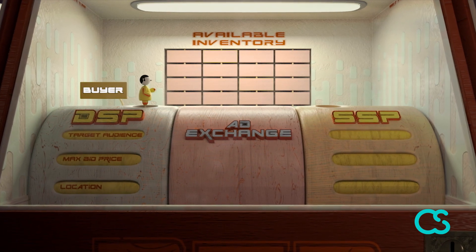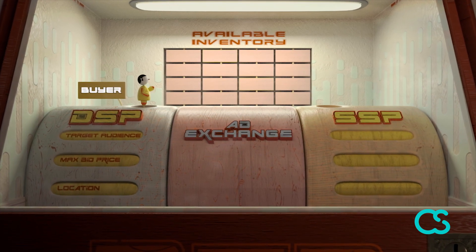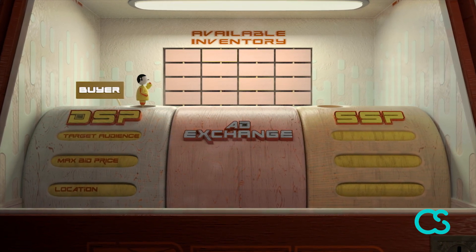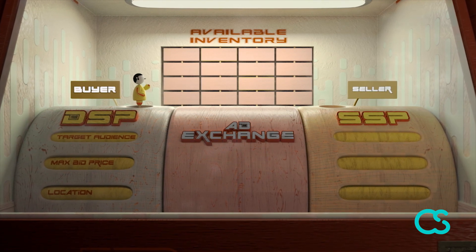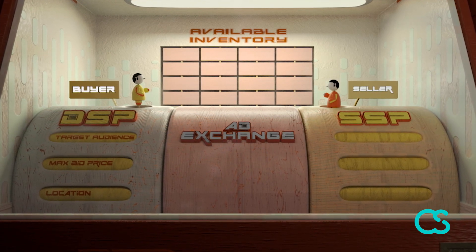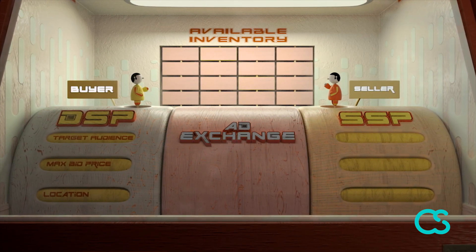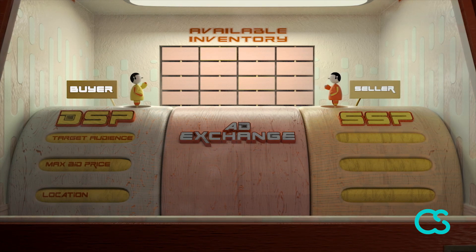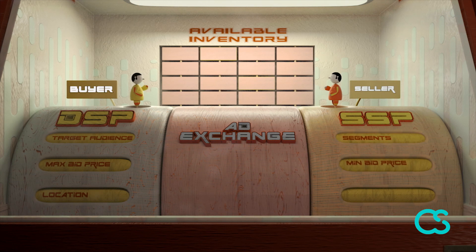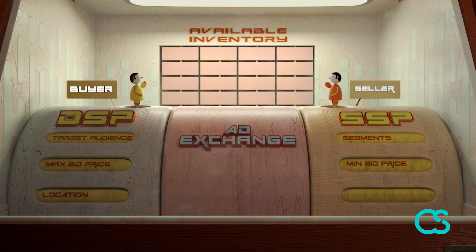On the other side, SSPs, or supply side platforms, are used by the sellers — media owners who are supplying ad inventory. SSPs hold a record of the inventory a media owner wants to sell, the different audience segments that visit the media owner's site, and the minimum price the media owner wants to sell for.